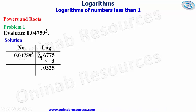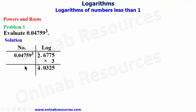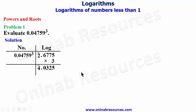Three times bar 2 is the same as three times negative two, which gives negative 6. Negative 6 plus the 2 we carried gives negative 4, written as bar 4. So we now find the anti-logarithm of bar 4.0325. To do that we keep the integer part and look for 03 under 2, differences of 5, on the anti-logarithm table.